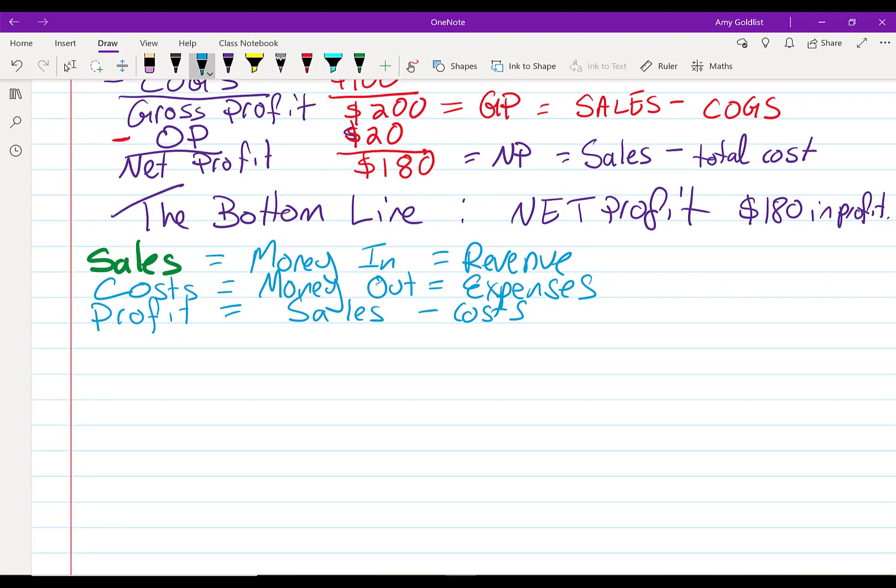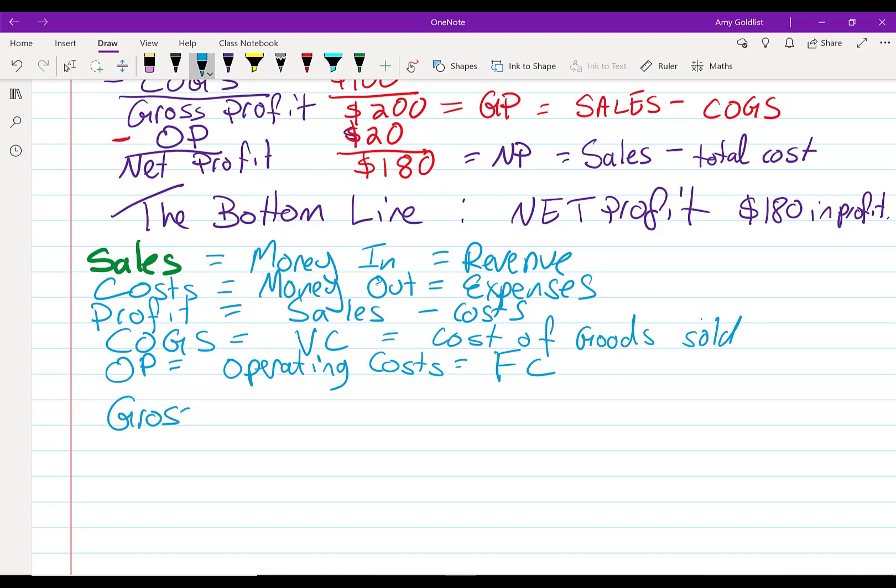We have net profit. Sorry, we have two types of costs. We have cost of goods sold and we have operating costs, OP or fixed cost. And that is the cost of things that we are spending one time. Finally, we've got gross profit is going to be sales minus cost of goods sold. And then we have net profit, which is going to be gross profit minus operating expenses.